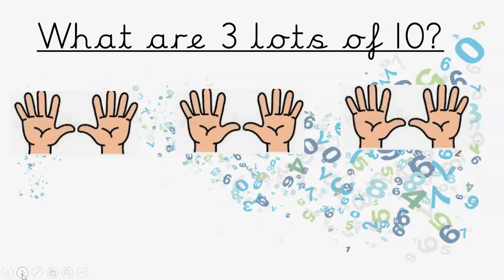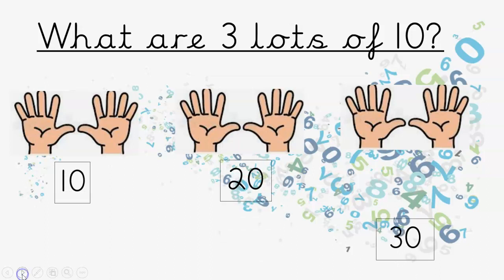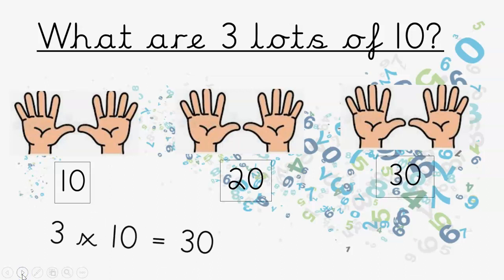What are three lots of ten? There they are. Ten, twenty, thirty. What's the multiplication sentence? Three times ten is thirty. Well done.